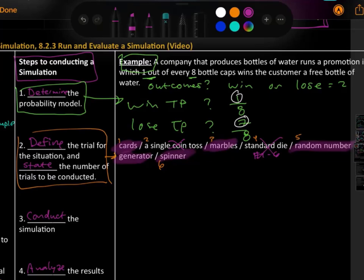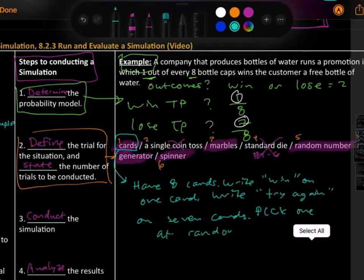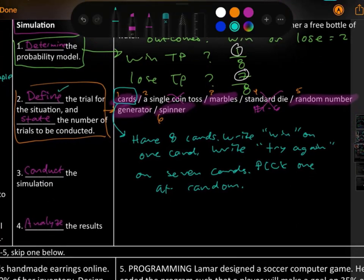You could pick any one of these. I think the easiest one to pick would probably be something like cards. Have eight cards. Write 'win' on one card. Write 'try again' on seven cards. Pick one at random. State the number of trials to be conducted. The nice number to run is kind of like 100. We will run the simulation or we will run this experiment 100 times.